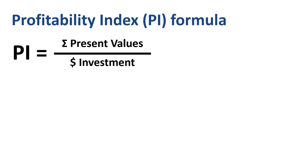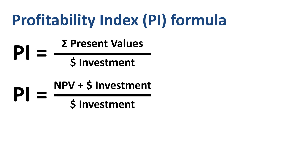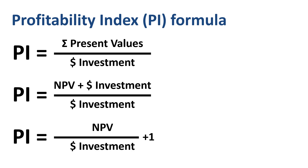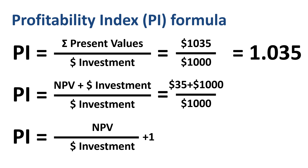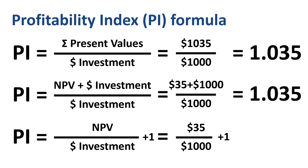There are several equivalent ways to write the Profitability Index formula. First: the sum of the present values of the future benefits divided by the investment. Second: the sum of NPV plus investment, divided by the investment. Third: NPV divided by investment, plus 1. Plugging in the numbers: $1,035 divided by $1,000 equals 1.035; ($35 + $1,000) divided by $1,000 equals 1.035; and $35 divided by $1,000 equals 0.035, add 1 to get 1.035. Different ways of writing the formula — same outcome.